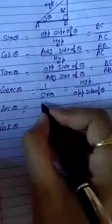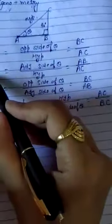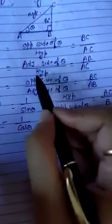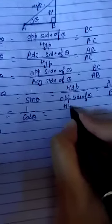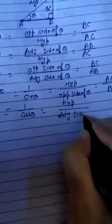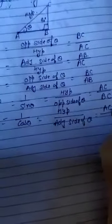Secant theta is the reciprocal of cos theta. The value of cos theta is adjacent side of theta divided by hypotenuse, so the value of secant theta is hypotenuse divided by adjacent side of theta. The hypotenuse value is AC and the adjacent side of theta is AB. Therefore, secant theta equals AC upon AB.